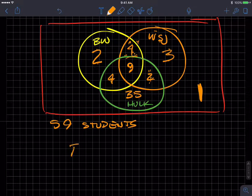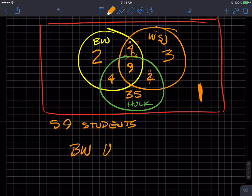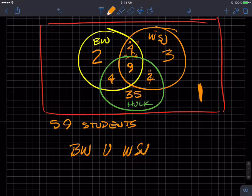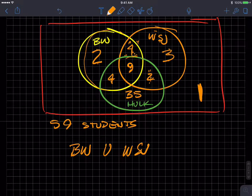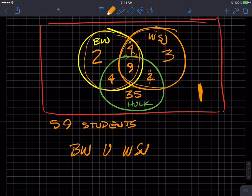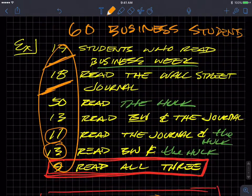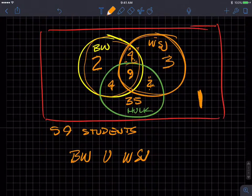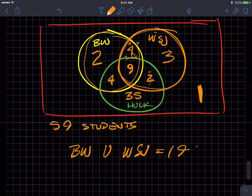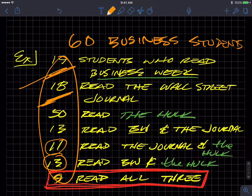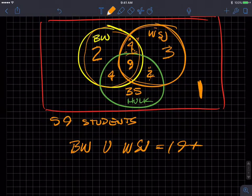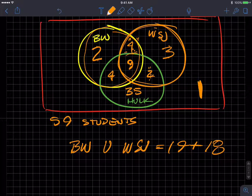Then you should be able to answer all kinds of questions. What's Business Week union Wall Street Journal, right? So that would be all of these Business Week plus all of these Wall Street journals. But you need to be careful. If you just went up here and added Business Week, which was 19, and added the Wall Street Journal, which was 18, you're going to make an error.